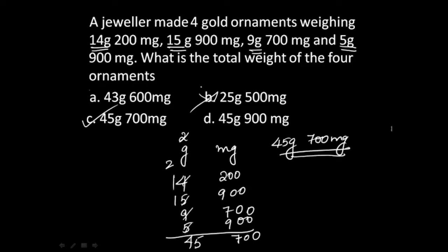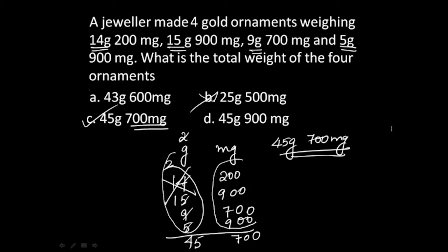Here's a shortcut for this question in the examination. When you start adding these weights, begin with the milligrams part. Adding the milligrams gives 700. There is only one option which has 700 milligrams — that has to be your answer. Don't waste time adding the grams part. Just by adding the milligrams, you know the answer is 700mg, and since only one option has 700 milligrams, mark that and move on. This saves you time.